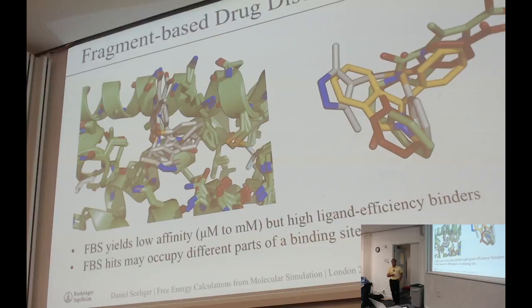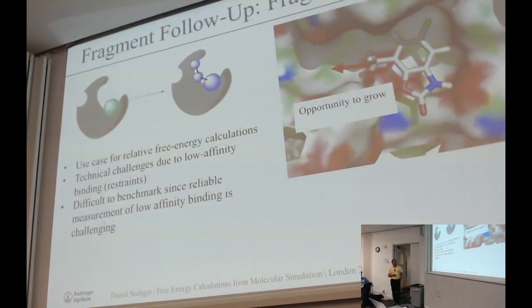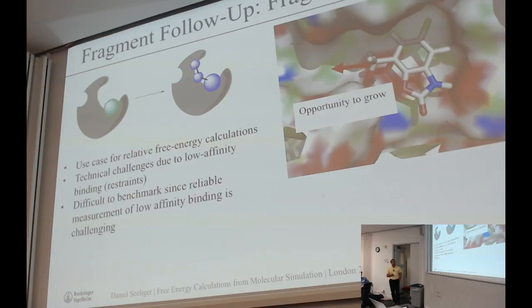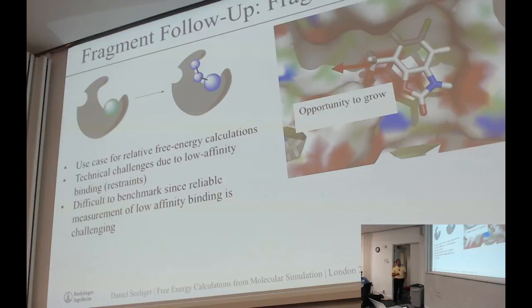What we actually want to do is start from a low-affinity binder and develop it into a high-affinity binder. The most obvious approach is to simply take a fragment and grow it in a certain direction — something where we think we could tackle with relative binding free energy calculations, depending on the size of the group you attach. There are certainly challenges, because these molecules bind with very low affinity and behave differently in simulations than more mature ligands — sometimes they even move out of the binding site. We have to check whether to use restraints. A very severe challenge is that there is not much reliable data to benchmark the methods here, and that's a real problem.